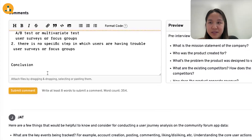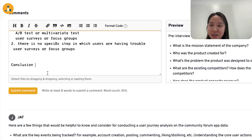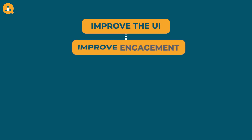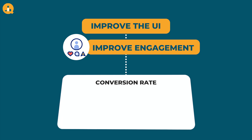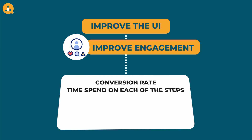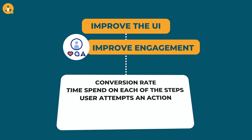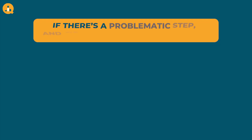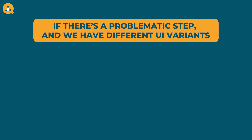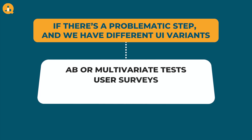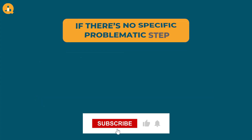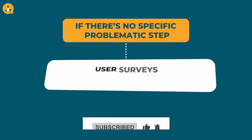In conclusion: if we want to improve the user interface with the ultimate goal of improving engagement — defined by likes, comments, or shares — we can look at the conversion rate for each step, look at how many minutes users spend on each step, find how many times a user attempts an action, or conduct cohort analysis, user surveys, or focus groups. If there is a specific problematic step and we have UI variants ready, we can do an A/B test or multivariate test. Alternatively, user surveys or focus groups can help us learn how to improve it. If there is no specific problematic step, we can conduct user surveys or focus groups.